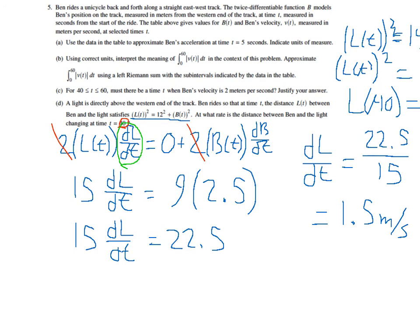So that is parts C and D from question number 5 on the 2011 AP Calculus AB Exam Form B.